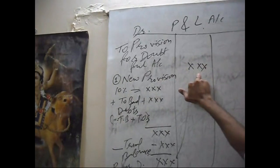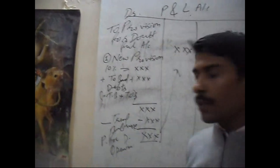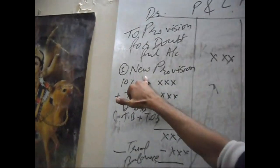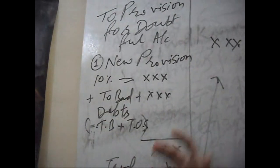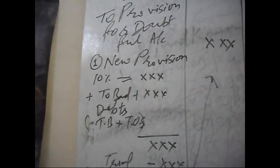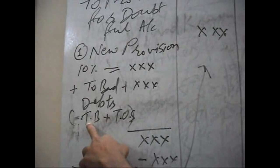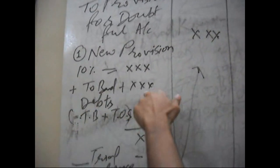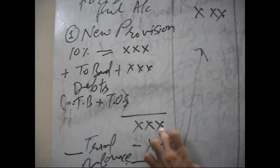For this, you first provide the new provision for doubtful debts - suppose this is 10%, you show it here. After this, you show total bad debts: bad debts in trial balance plus bad debts outside the trial balance.